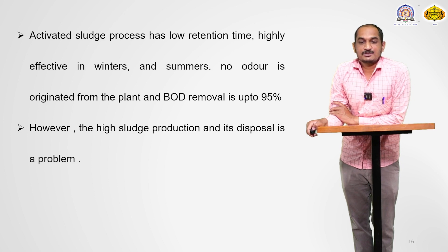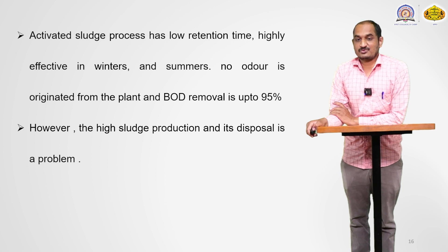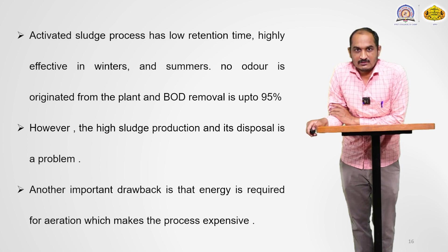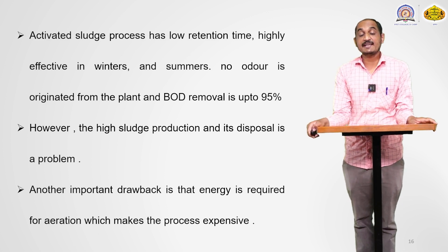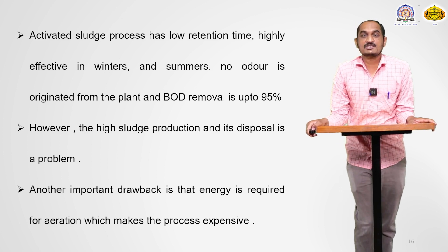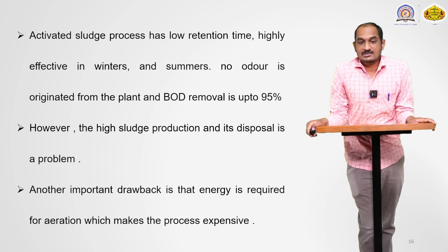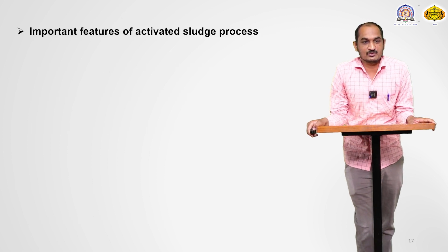However, high sludge production and its disposal is a problem because the activated sludge process produces a large amount of sludge, causing disposal problems. Another important drawback is that energy is required for aeration, which makes the process expensive since aeration is the most important part of this process and requires a large amount of energy. This is the most important drawback of this process.